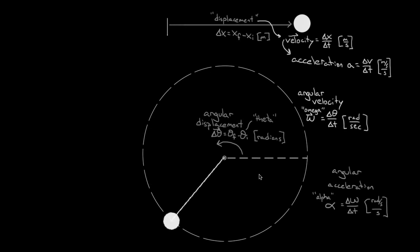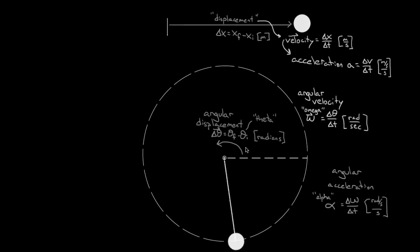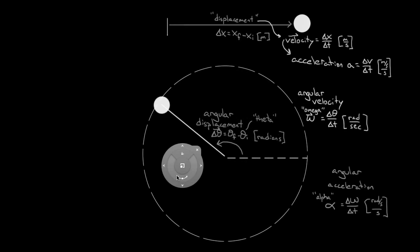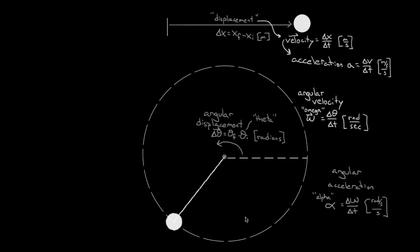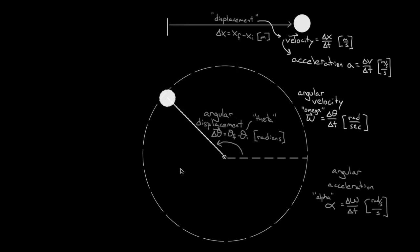Just like any acceleration, angular acceleration can increase the angular velocity and speed something up, or it can slow the object down and decrease the angular velocity. But if the angular velocity is remaining constant — rotating in a circle at a constant rate — then the angular acceleration is zero, and that means alpha equals zero. Just like the rest of these motion variables, angular acceleration is a vector, just like regular acceleration is a vector.